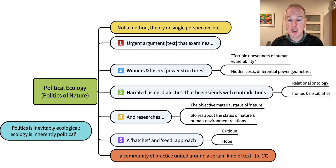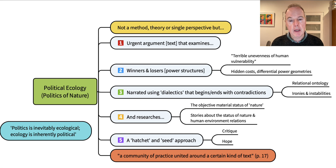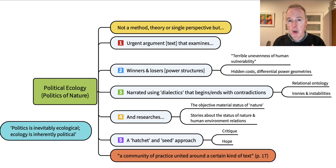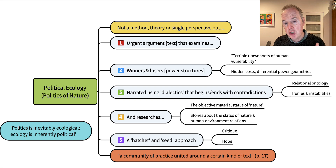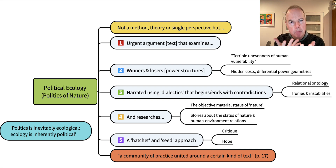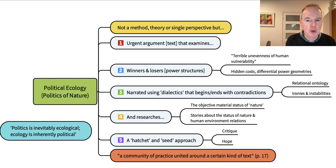Political ecology researches the objective and material status of nature — there is a commitment to science and to documenting the material. But it's also attentive to particular narratives, culture, symbols, and stories about nature and human-environment relations. Because the objective features of the world — like the fact that we are now in a world going above 1.5 degrees Celsius surface temperature for the first time in human history — are a function of the stories that humans have told about the environment and their relationship to it.